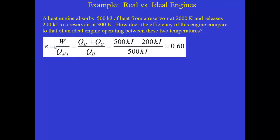So let's calculate the efficiency. Well, W over Q absorbed. Right? So we've got QH plus QC over QH. So that's 500 kilojoules. QC since that's a release that's negative minus 200 kilojoules over the total amount absorbed is equal to 0.6. So that's an engine that's 60% efficient.